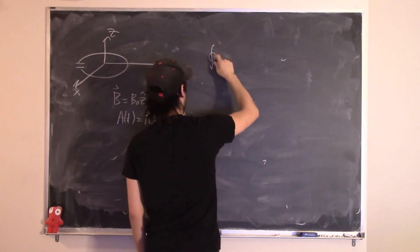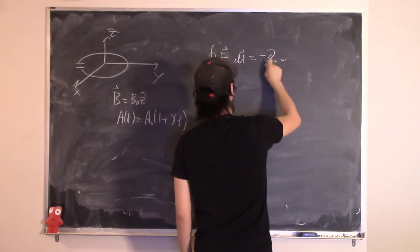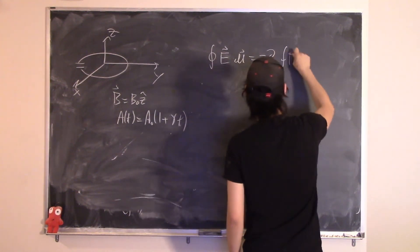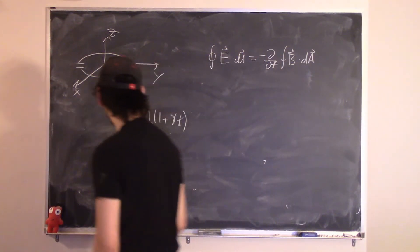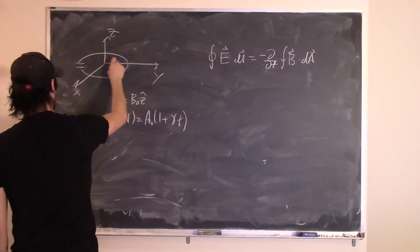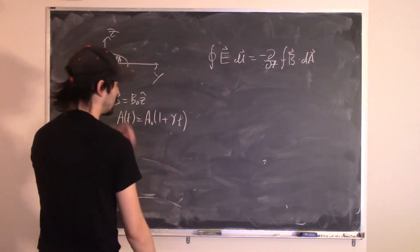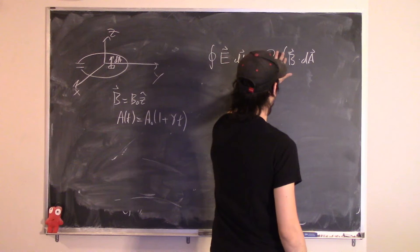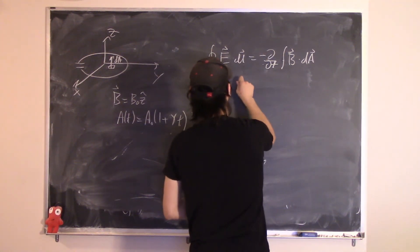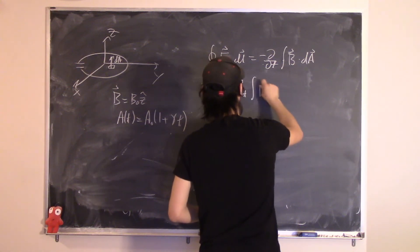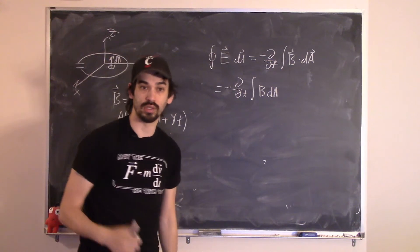Starting with Faraday's Law: the integral of E dot dL equals minus the partial derivative with respect to time of the integral of B dot dA. I choose dA to point out so the dot product is positive. Since B is constant, I can pull it outside the integral, giving minus partial derivative with respect to time of B0 times A(t).